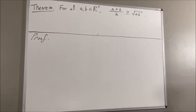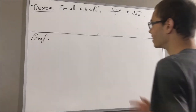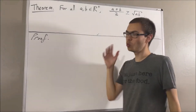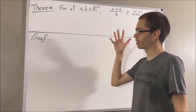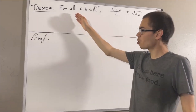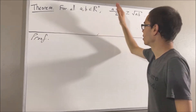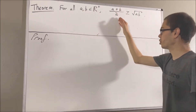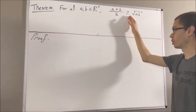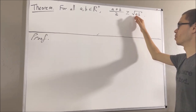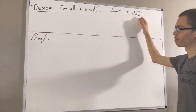Hello! In this video, we are going to prove the following theorem. For all positive real numbers a and b, a plus b over 2 is greater than or equal to the square root of a times b.